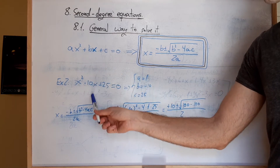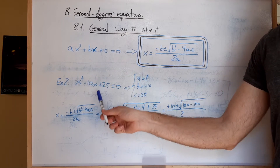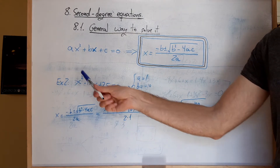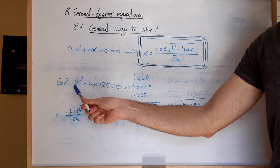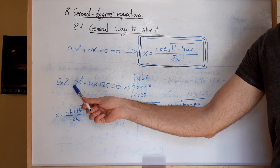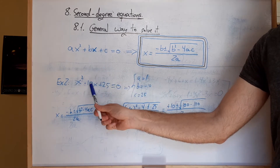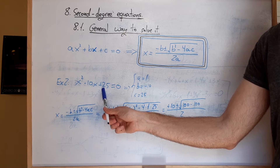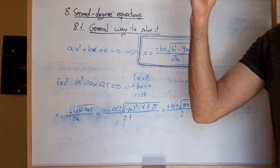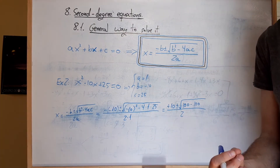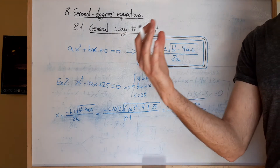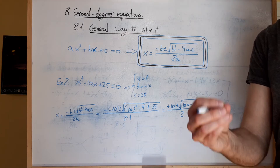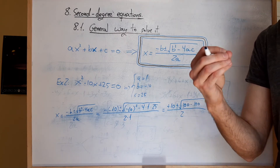En este caso, comparando las dos fórmulas del ejemplo con la ecuación de segundo grado de la teoría, vemos que a, que es el coeficiente de la x al cuadrado, vale 1, porque no aparece. B va a valer menos 10, que es el coeficiente de la x, y c, que es el término independiente, vale más 25. Lo ponemos a su lado — es absolutamente obligatorio ponerlo para que no os confundáis luego sustituyendo.